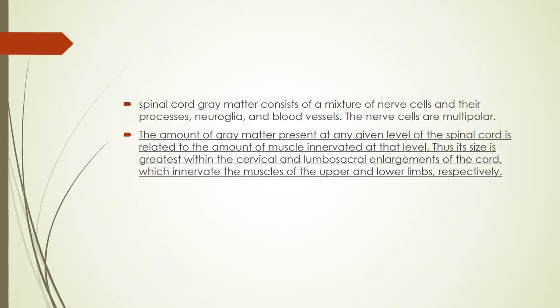What is the structure of this gray matter? The gray matter consists of a mixture of nerve cells and their processes, with supporting cells called neuroglia and blood vessels. The nerve cells are multipolar. The relative amount of gray and white matter and the shape and size of the gray columns vary at different levels of the spinal cord.